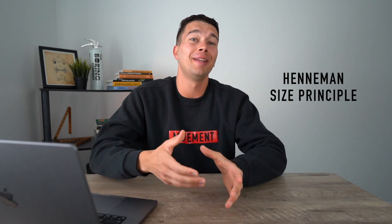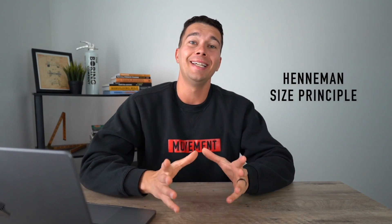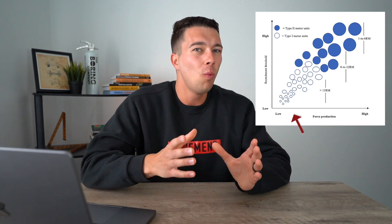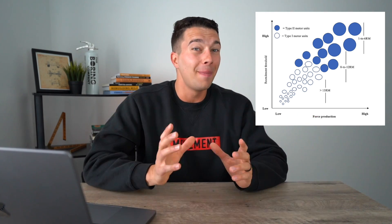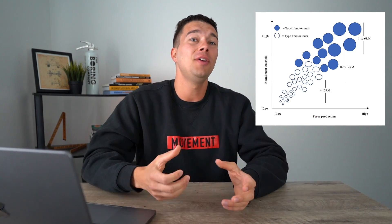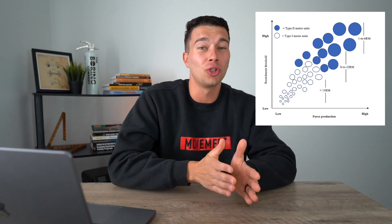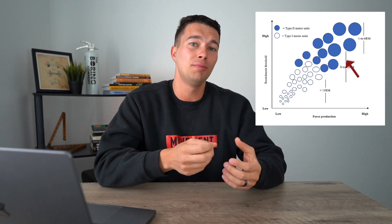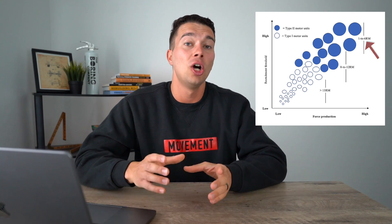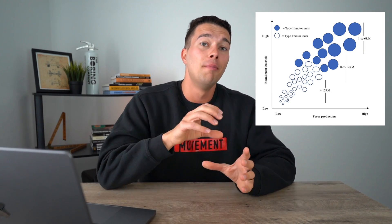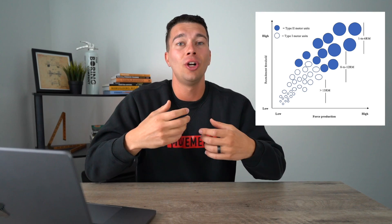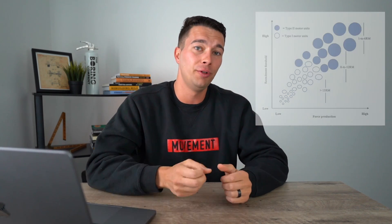There's something called the Henneman Size Principle that explains this concept. Basically, if we're lifting a weight we can lift for 20 or 30 repetitions, we'll only need to use type 1 fibers. But as we use a heavier weight — one we can only do 10 reps or only 5 reps with — we need to use more of our type 2 muscle fibers. So we recruit more and more bigger fast twitch muscle fibers as we go heavier or move faster.